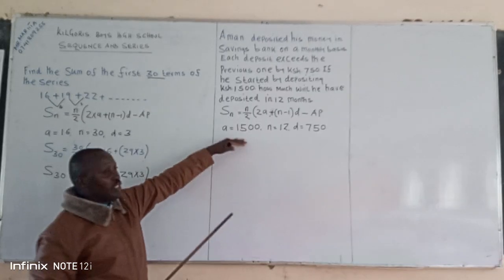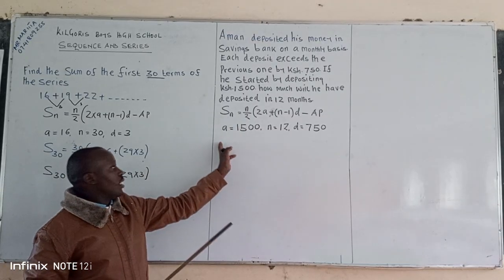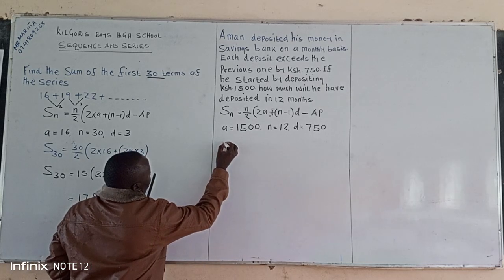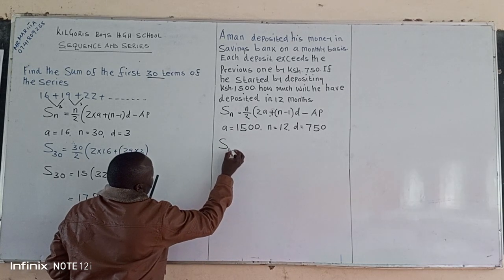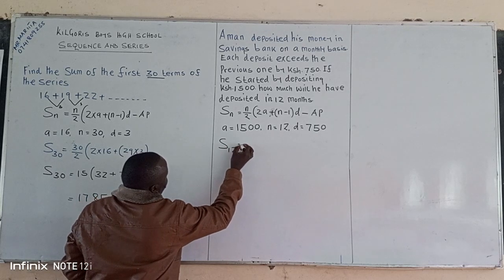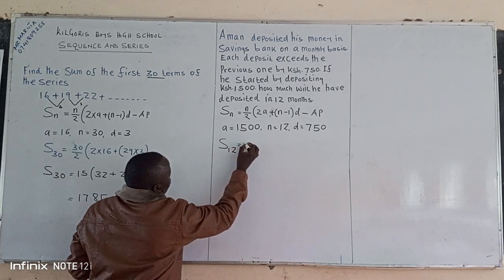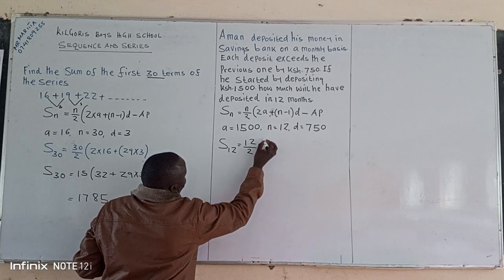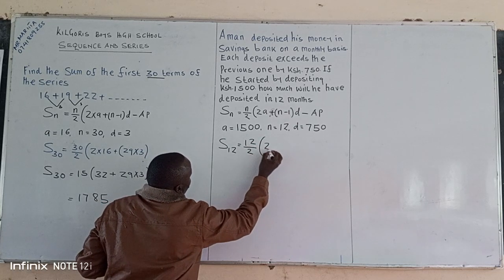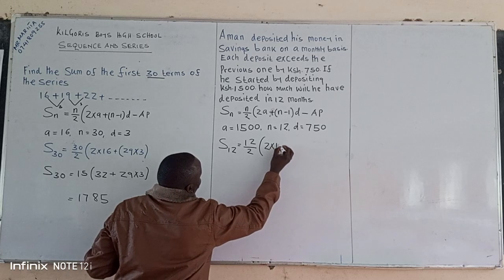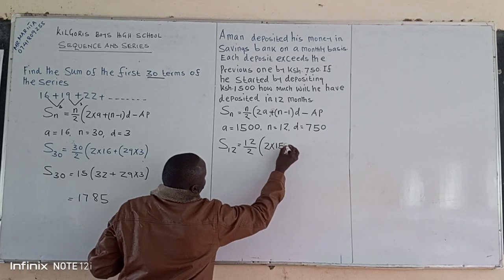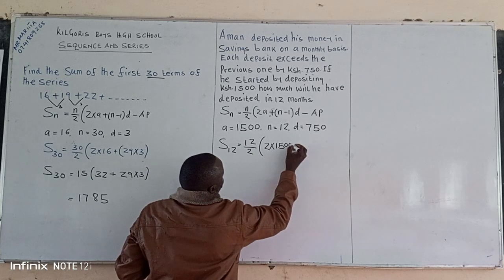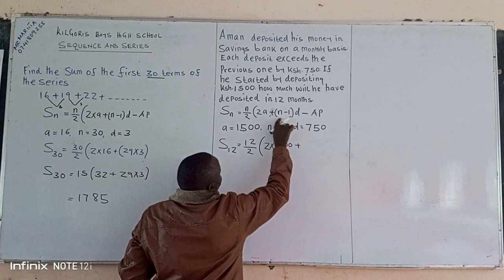So now we can substitute in this formula. We substitute these unknown values there, such that now we have our S in the first 12, divided by 2, then you would have 2 multiplied by a, and our a is 1500.